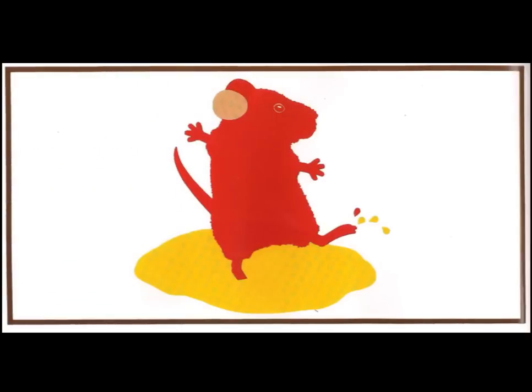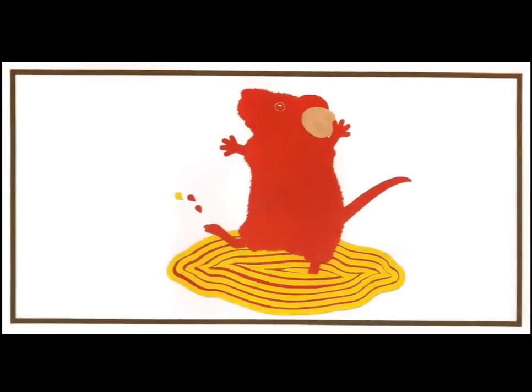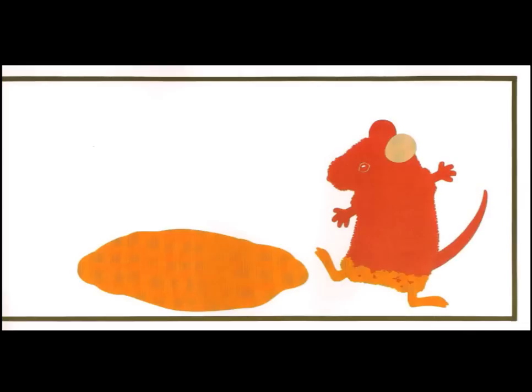They dripped puddles of paint onto the paper. The puddles looked like fun. The red mouse stepped into a yellow puddle and did a little dance. His red feet stirred the yellow puddle until... Look! he cried. Red feet in a yellow puddle make orange.